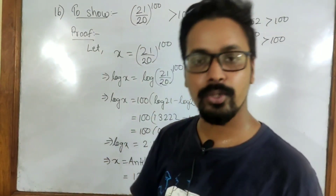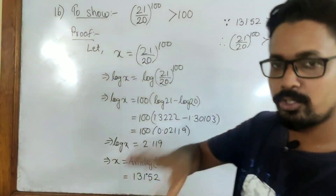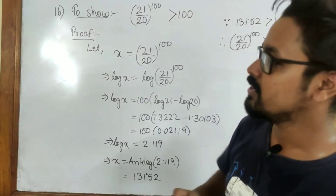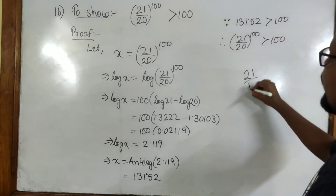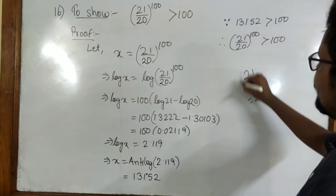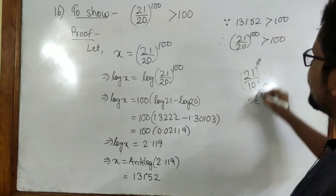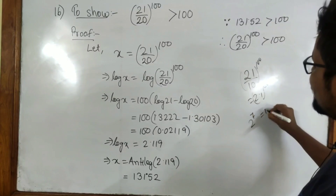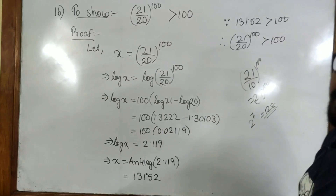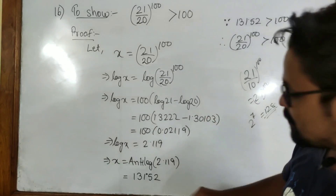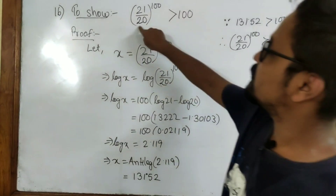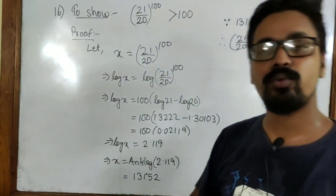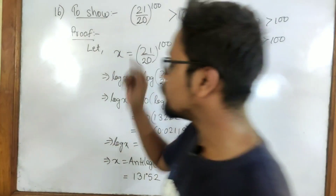With 21 by 10 you can also solve, but the actual question is 21 by 20 because 21 by 10 is pretty simple — it is very obvious. 21 by 10 means 2.1, and 2.1 to the power 100 is clearly greater than 100 since even 2 to the power 7 gives 128. So the denominator will be 20, and the power will be 100. We took x equal to the LHS and will find its value.